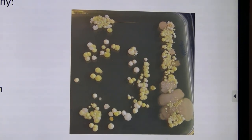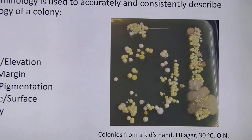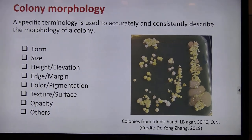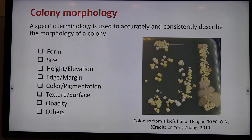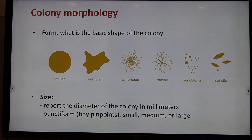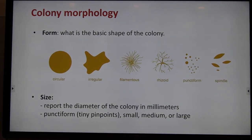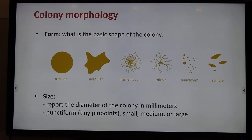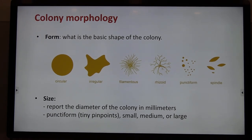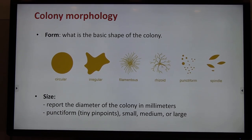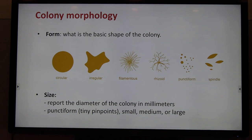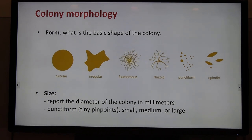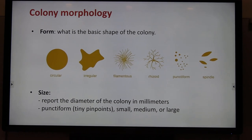Colony morphology can be described by the form, the size, the height, the edge, the color, and many other things. The form refers to the basic shapes of the colony. This photo shows several common colony forms, such as circular, irregular, filamentous, and other different shapes.